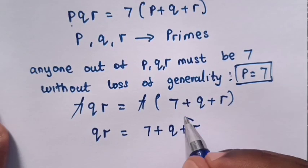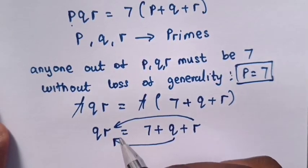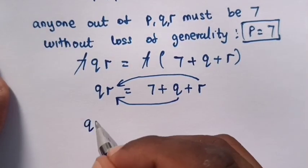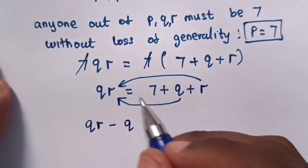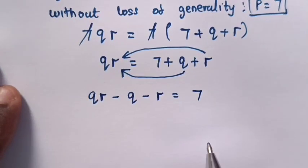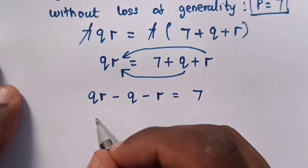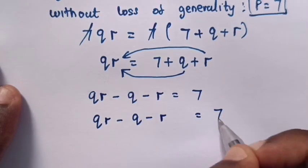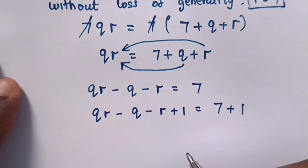Then next step, we take R to the left side and Q to the left side. So QR minus Q minus R equals 7. From here, this equation, we add 1 in both sides so we can factorize.